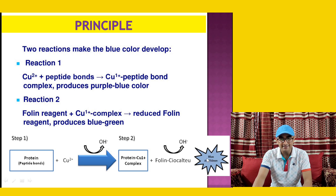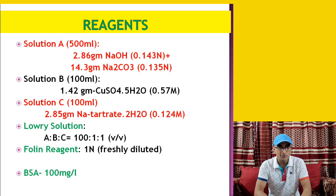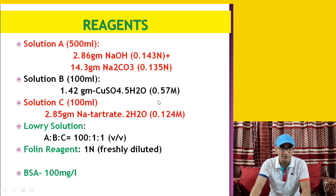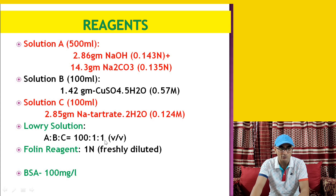For reagent preparation, three solutions are required. Solution A (for 500 ml): 0.143 N NaOH and 0.135 N sodium carbonate. Solution B (for 100 ml): 0.57 M copper sulfate pentahydrate. Solution C (for 100 ml): 0.124 M sodium tartrate dihydrate. These three solutions A, B, and C are mixed in the ratio of 100:1:1 (volume by volume) to give the Lowry reagent.